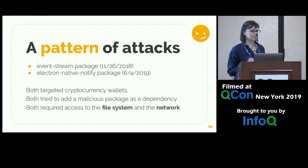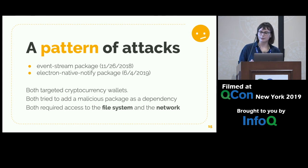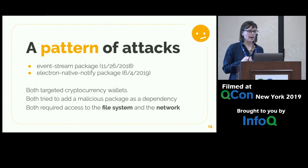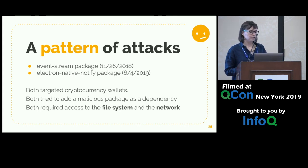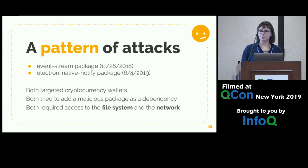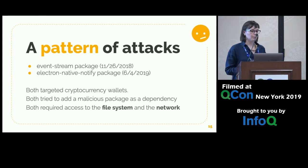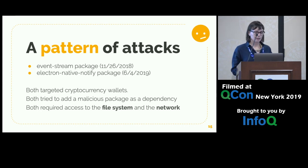We saw this pattern again just this month with the electron-native-notify package, which also had a malicious dependency targeting cryptocurrency wallets. It required access to the file system and the network. NPM was able to stop this attack, luckily. But I'm sure we're going to see this pattern again and again if we don't do something to prevent it.